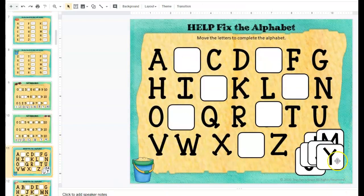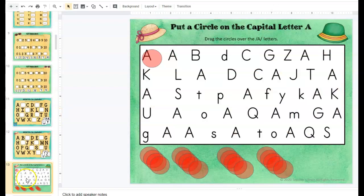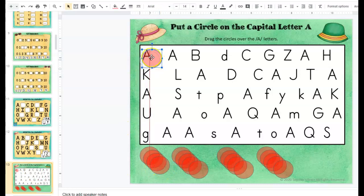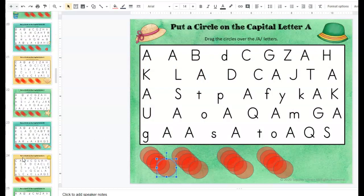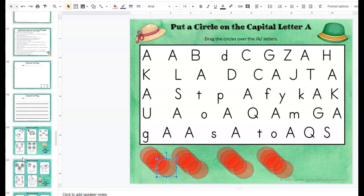This one they will drag the letter to fix the alphabet, and then you've got A through Z for these. Each one will have like this one has find the capital letter A and they will move this over each A, and you've got all the way A through Z. Let me skip through all these because they're